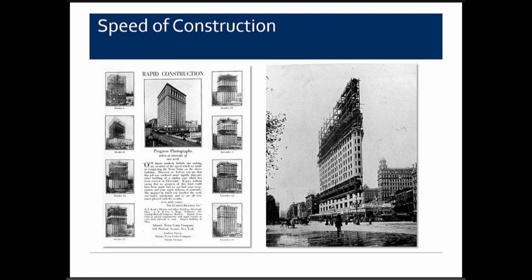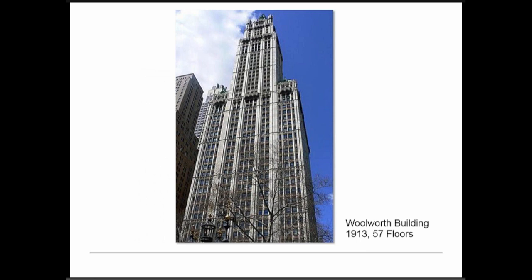A big advantage of terracotta was weight and speed of construction — buildings could be built much more quickly by hanging the cladding system from the structural frame rather than making it integral to the structure. The apex of this era was the Woolworth Building, a terracotta-clad high-rise in New York City, 57 stories tall — certainly the tallest terracotta building constructed.